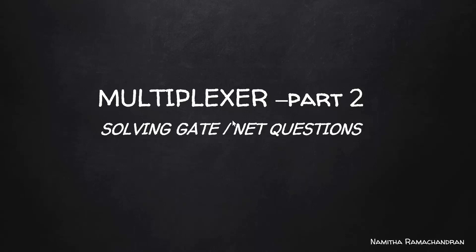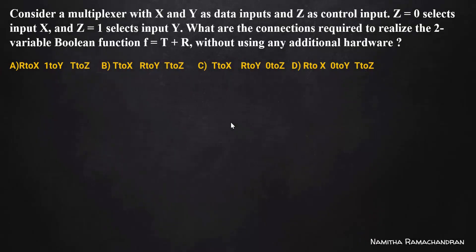Welcome back everyone. We can discuss some more questions on multiplexers. The first one is: consider a multiplexer with x and y as the data inputs and set as the control input. As set equal to 0, it selects input x, and set equal to 1, it selects input y. What are the connections required to realize the two-variable boolean function f equal to t plus r, without using any additional hardware?